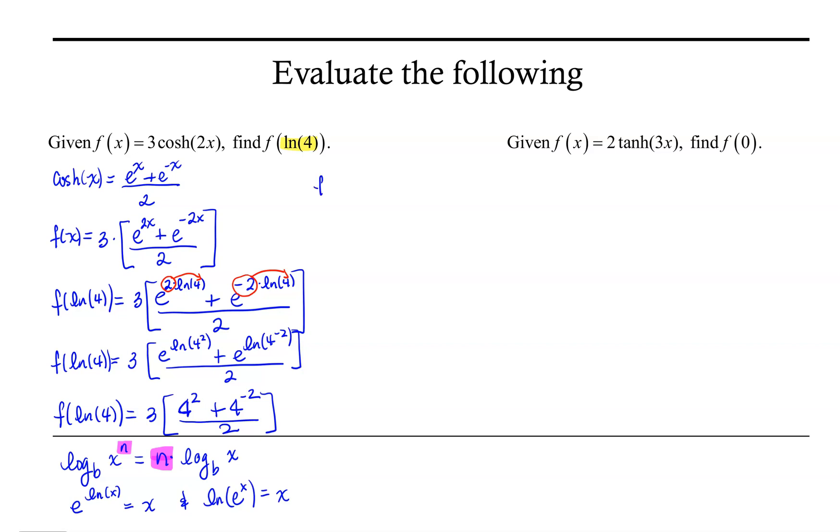So finishing this up, f of the natural log of 4 is 3 halves times 4 squared is 16, 4 to the negative 2 power is 1 over 16. And so f of the natural log of 4 is equal to, using the distributive property, 48 over 2 plus 3 over 32. And f of ln of 4, 48 over 2 is 24.